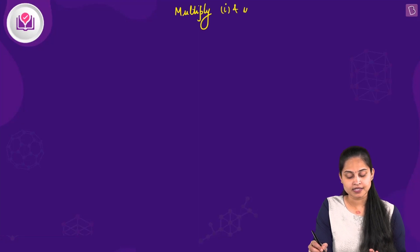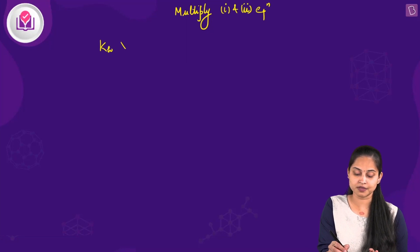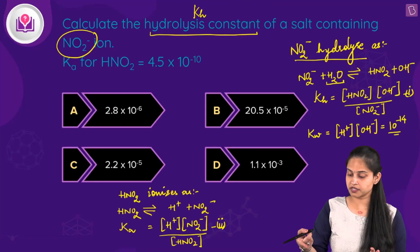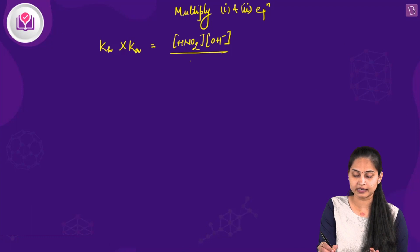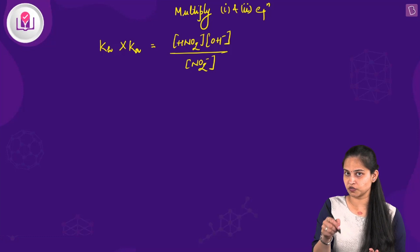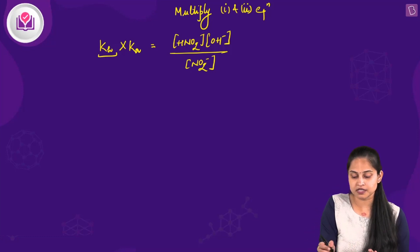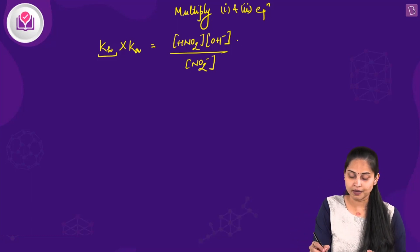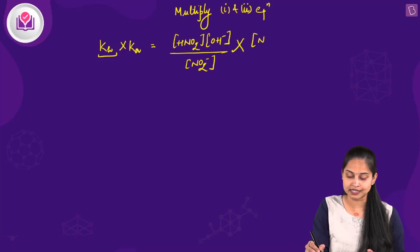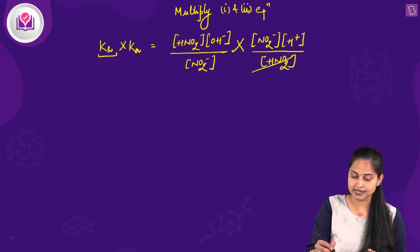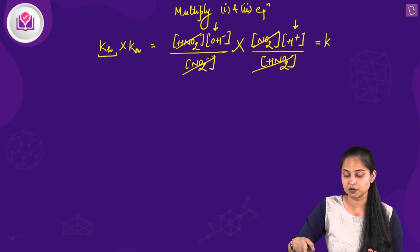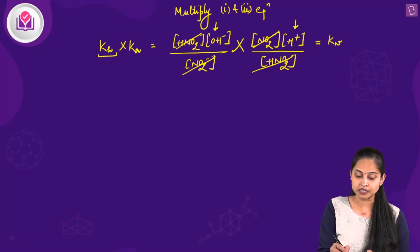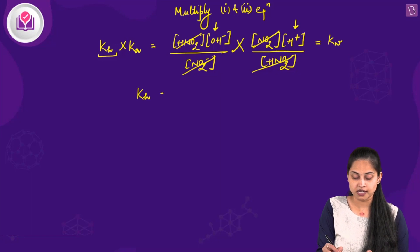Multiplying KH by Ka: KH is [HNO₂][OH⁻] / [NO₂⁻], and Ka is [NO₂⁻][H⁺] / [HNO₂]. The HNO₂ and NO₂⁻ terms cancel, leaving [H⁺][OH⁻], which equals Kw. Therefore KH × Ka = Kw, so KH = Kw / Ka.